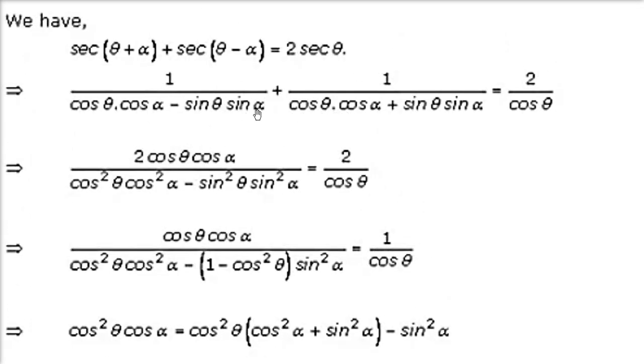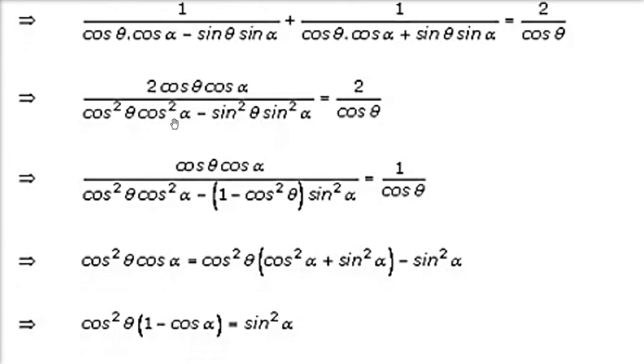Cross-multiplying gives cos²θ · cos α on the left. On the right, expand and bring terms across. Write sin²θ as 1 − cos²θ and rearrange. After collecting terms, you can factor cos²θ from part of the expression, getting cos²θ(1 + sin²α) and the remaining term −sin²α.